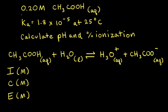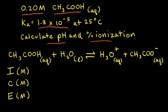Let's say we have a 0.20 molar aqueous solution of acetic acid, and our goal is to calculate the pH and the percent ionization. The Ka value for acetic acid is equal to 1.8 times 10 to the negative fifth at 25 degrees Celsius.